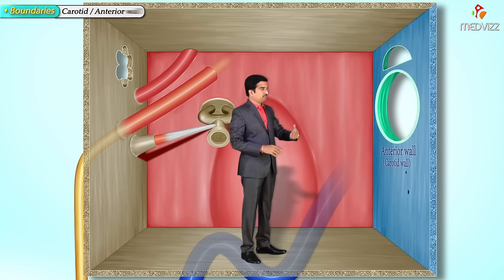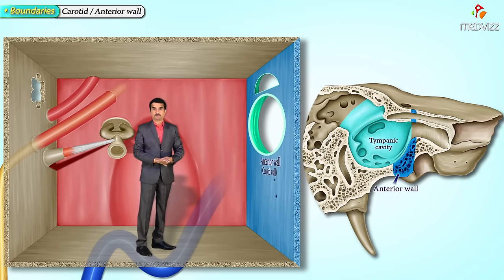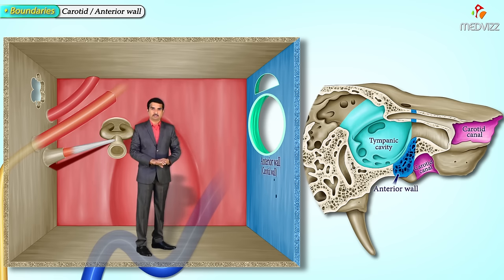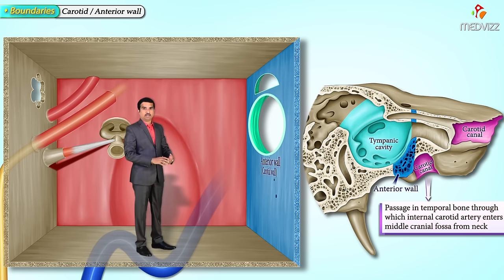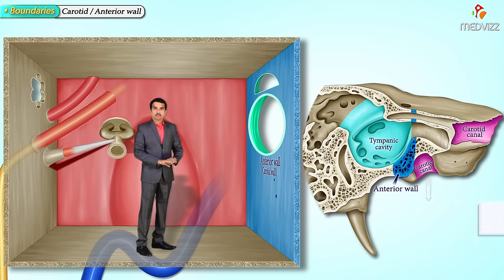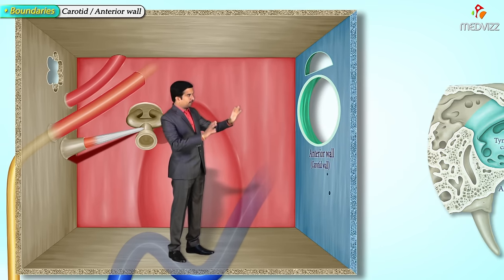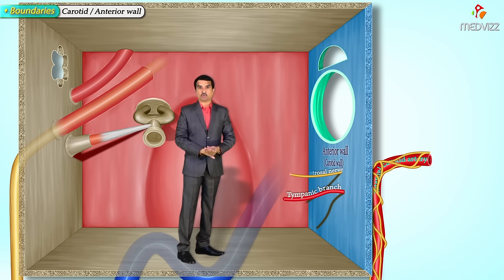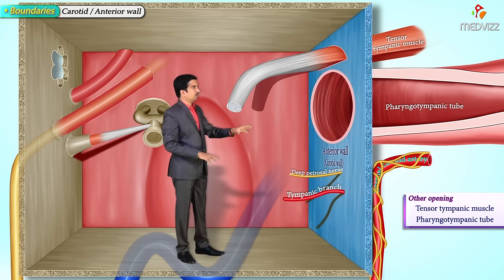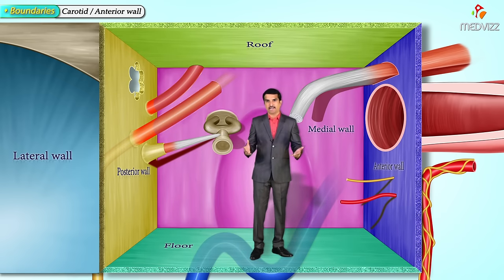The anterior wall, also called the carotid wall, separates the tympanic cavity from the carotid canal. The carotid canal is a passageway in the temporal bone through which the internal carotid artery enters the middle cranial fossa from the neck. A thin plate of bone separates the carotid canal from the tympanic cavity, and this wall is perforated by the tympanic branch of the internal carotid artery and the deep petrosal nerve.